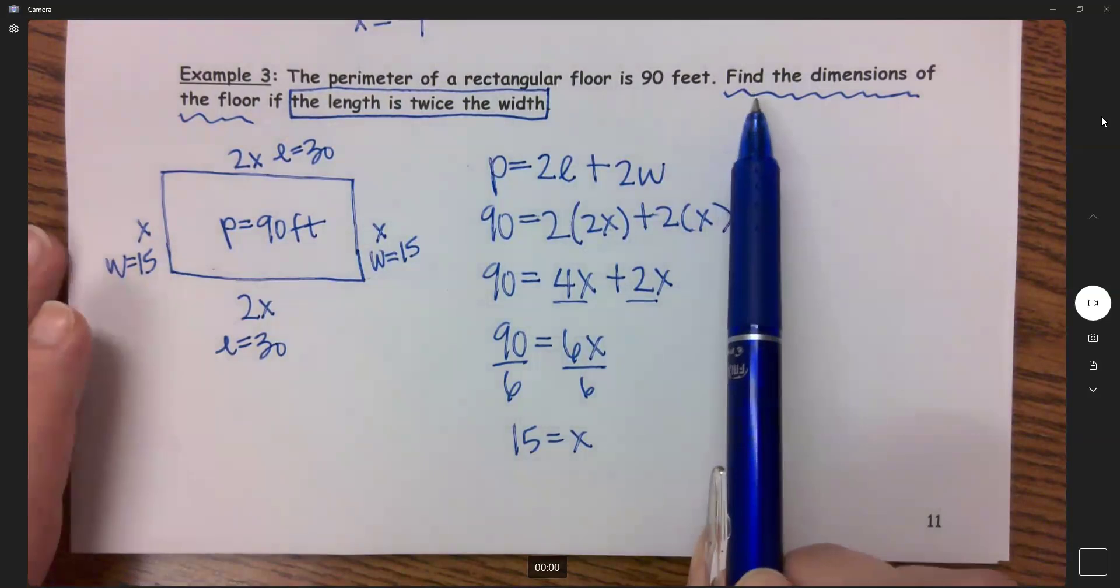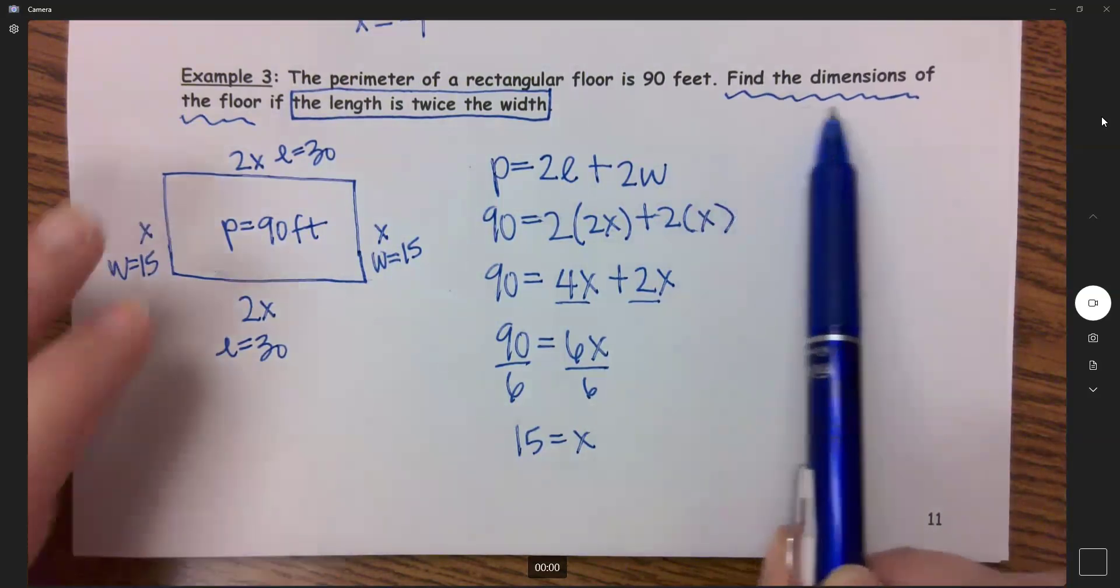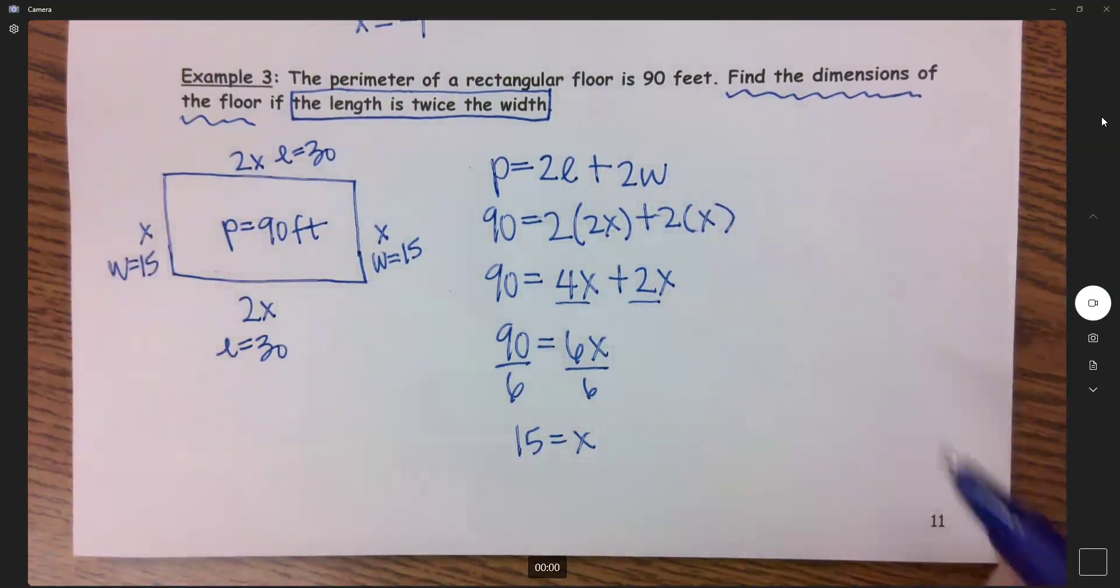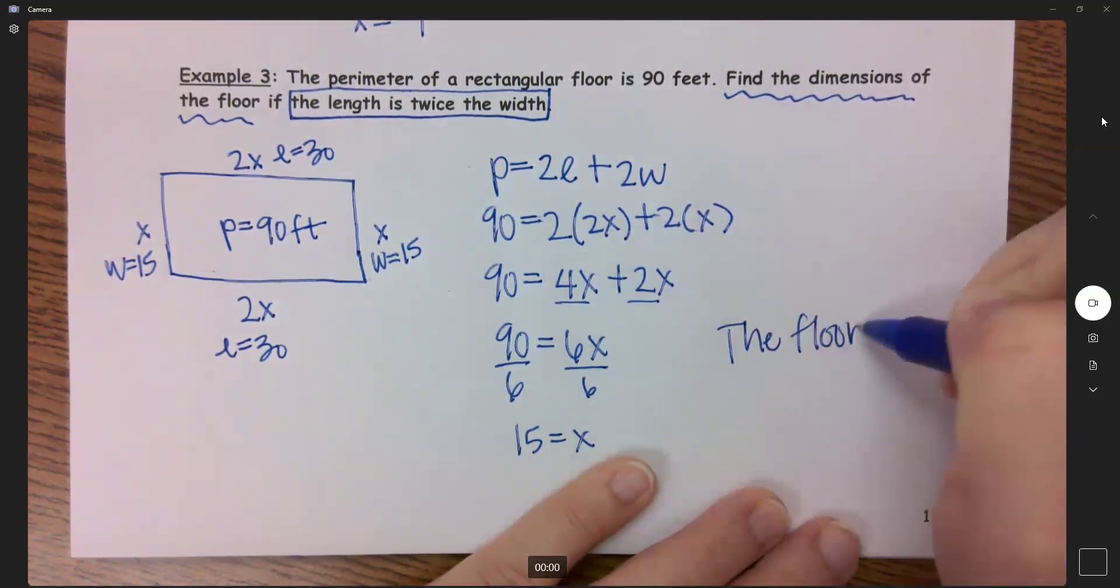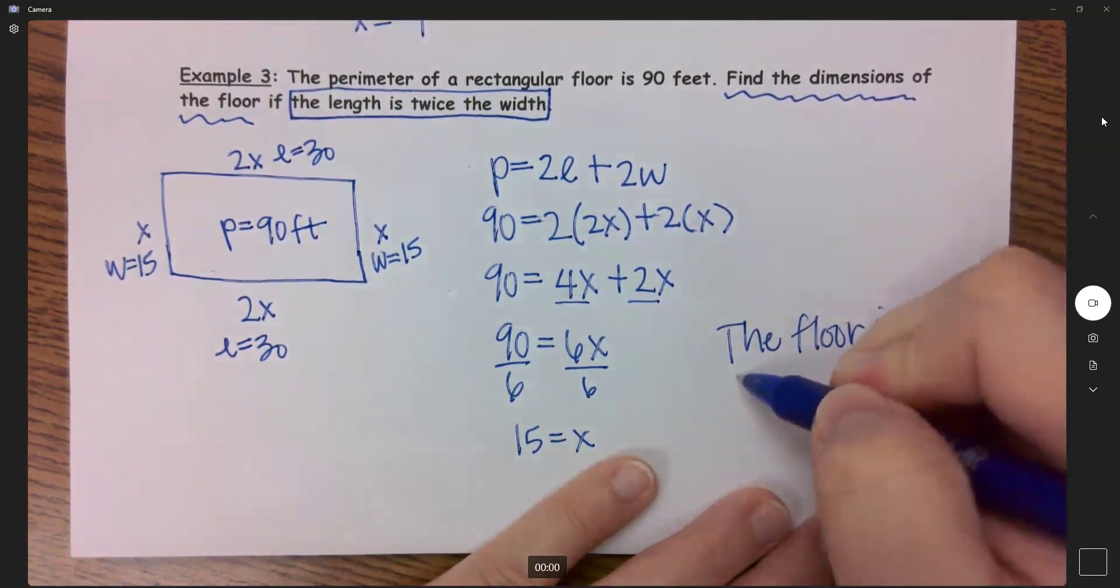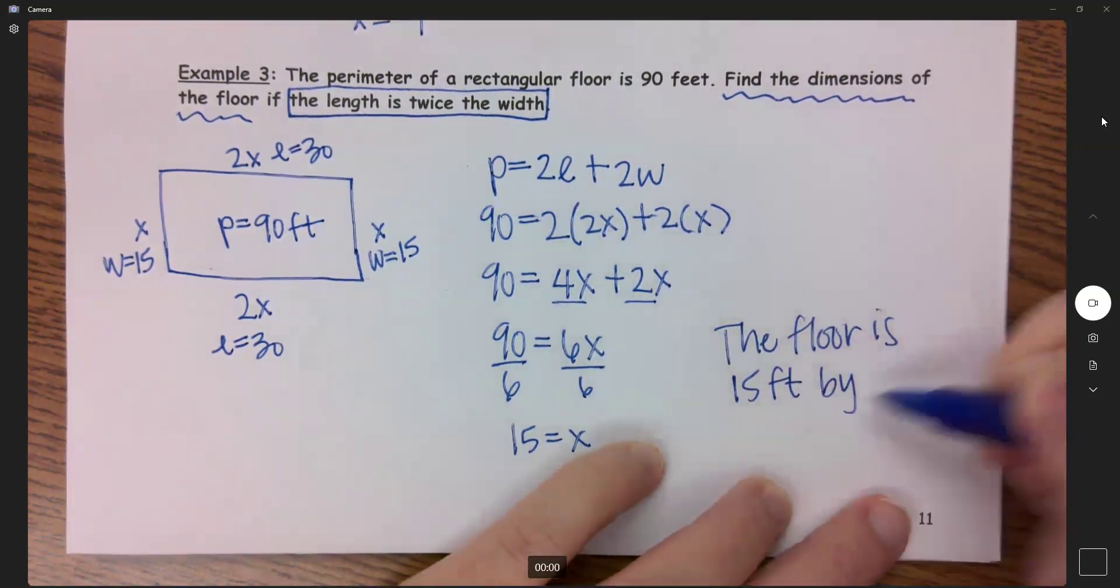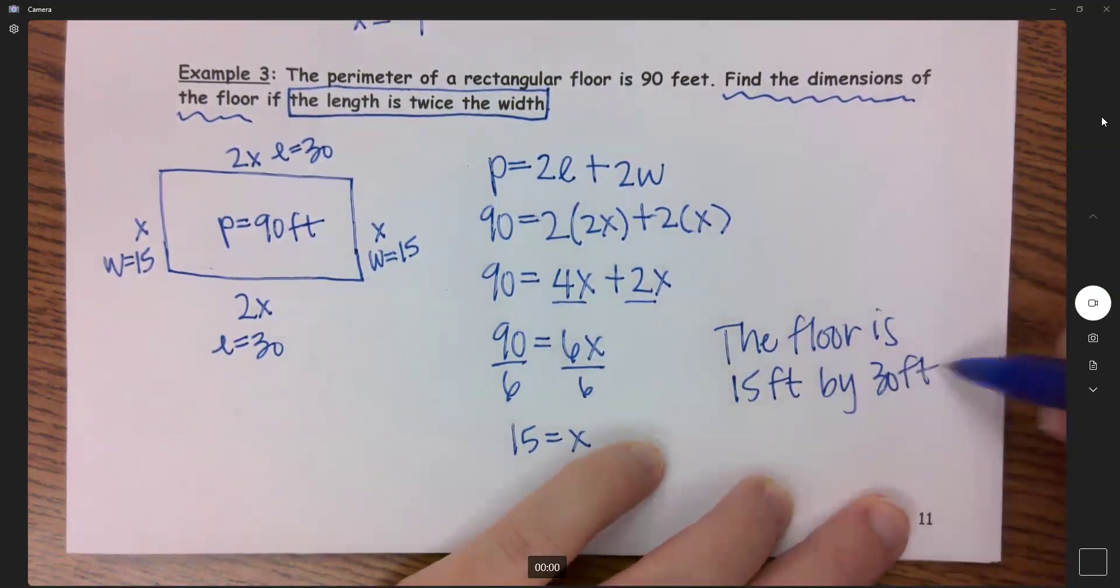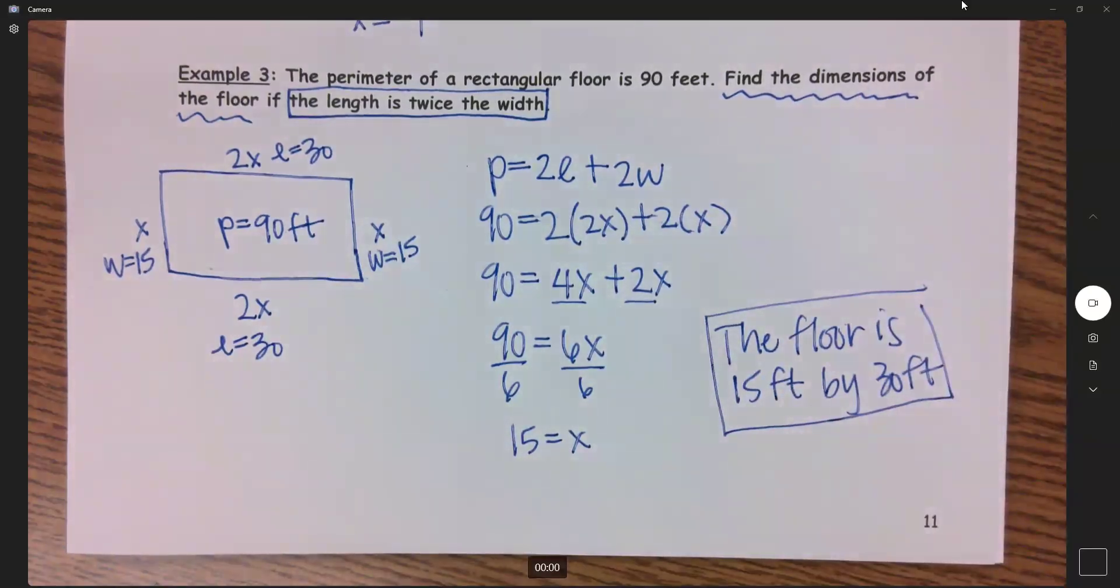So word problems need word answers or at the very minimal units. Find the dimensions of the floor. The floor is 15 feet by 30 feet.